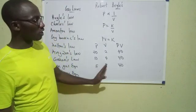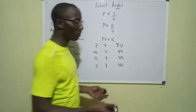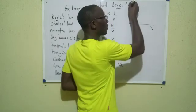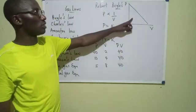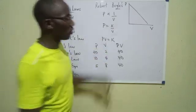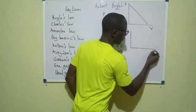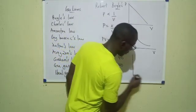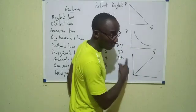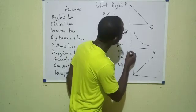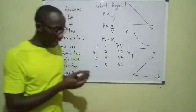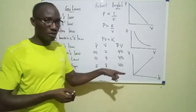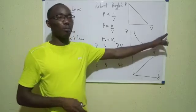If we express this law graphically, with pressure on one axis and volume on the other, the graph slopes downward — that is the graph for Boyle's Law. You may also draw the graph with one axis inverted: for example, V on one axis and 1/P on the other, or P on one axis and 1/V on the other. The key point is that one side must be the inverse, and then the graph slopes upward from left to right.